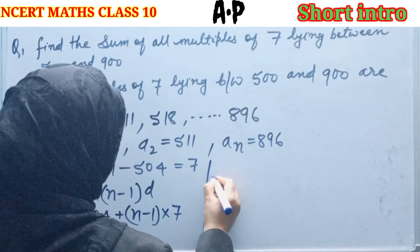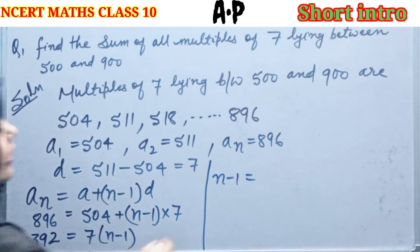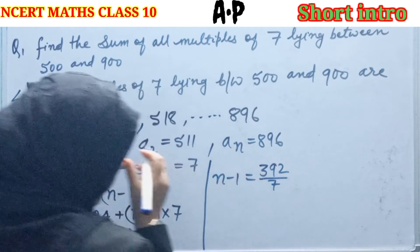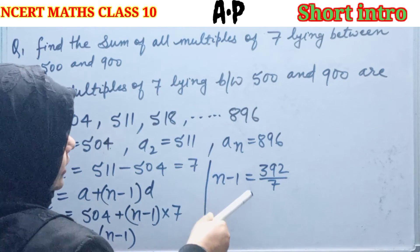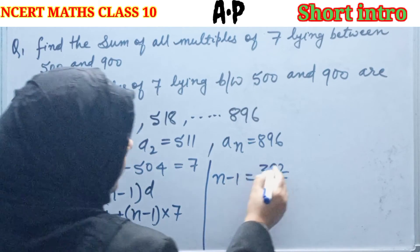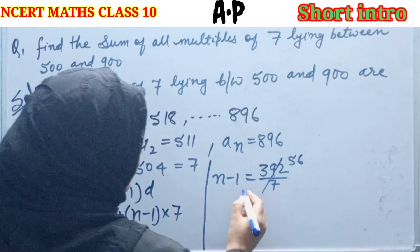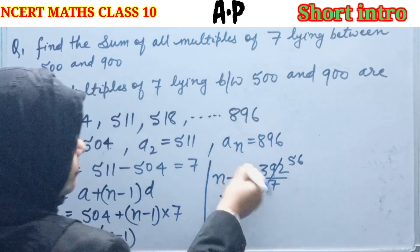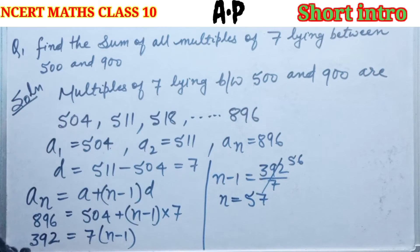Therefore, N minus 1 equals to 392 divided by 7. 392 divided by 7 is 56. N minus 1 equals to 56, so N equals to 56 plus 1, which is 57. We have the N value now.